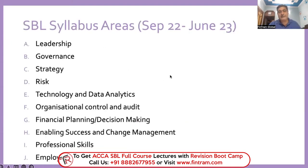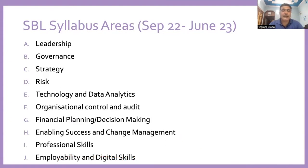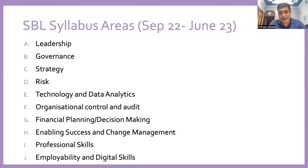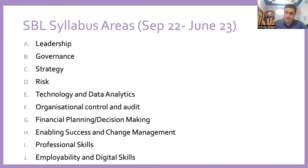Moving on, you have the syllabus area in front of you. The syllabus area runs from A to J. We have Leadership, Governance, Strategy, Risk, Technology, Organization Control, Financial Planning, Change Management, Professional Skills, Employability, and Digital Skills. Professional skills are covered separately in terms of covering those five professional skills. The last syllabus area is Employability and Digital Skills — this is essentially about handling the computer-based exam.